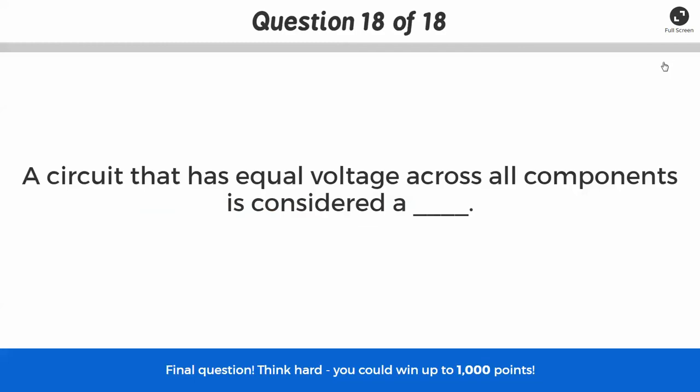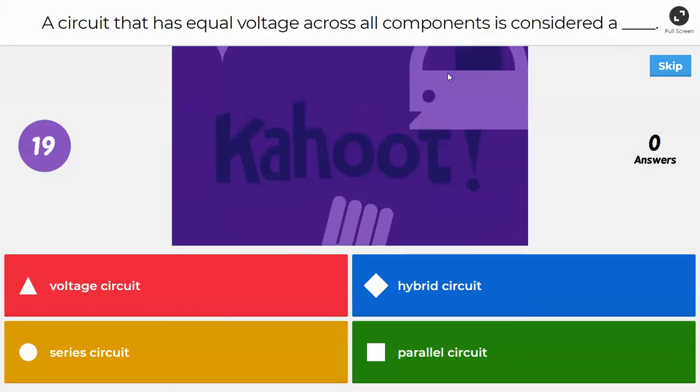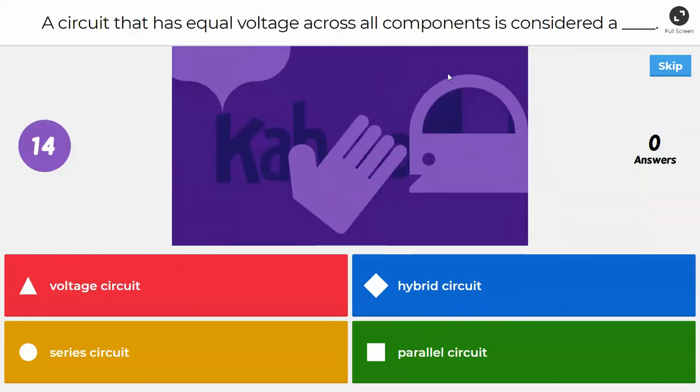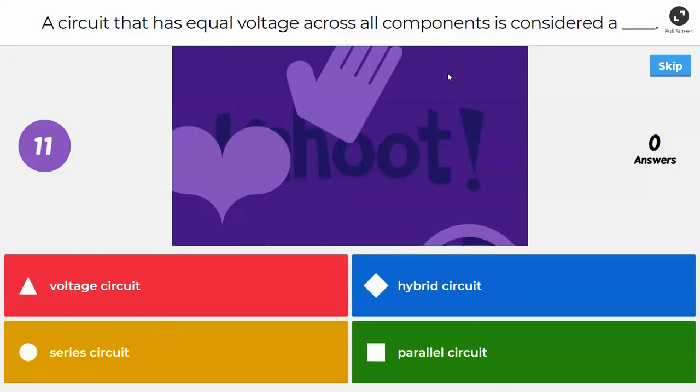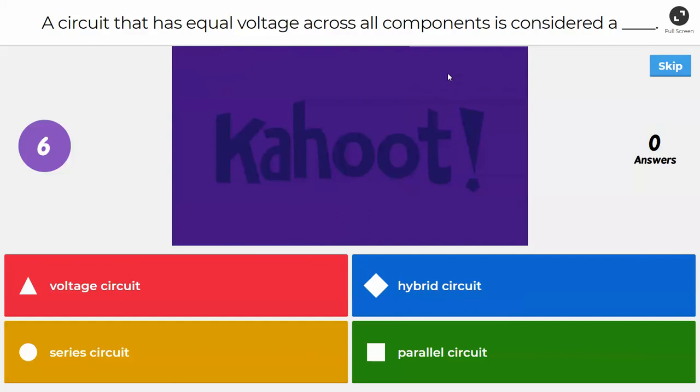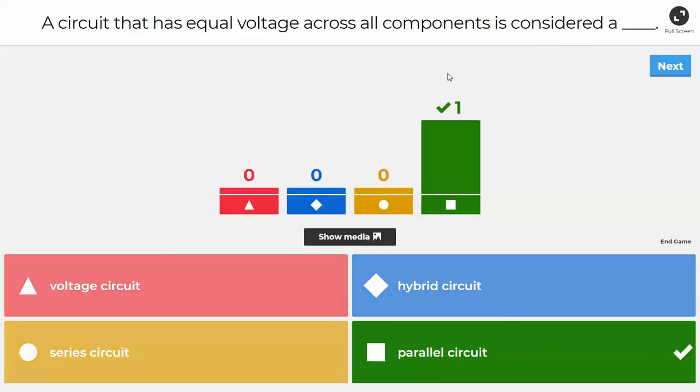Okay, last question. A circuit that has equal voltage across all components, what is that considered? Is it a voltage circuit, a hybrid circuit, a series circuit, or a parallel circuit? All right, so that's a parallel circuit. So if all the voltage is equal, then all the paths are, between all the paths, the voltage would be equal among all of those. And the circuit, sorry, the current would be different between them.